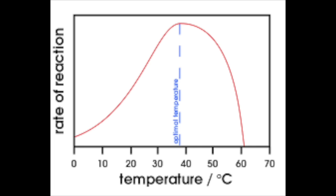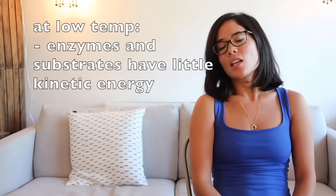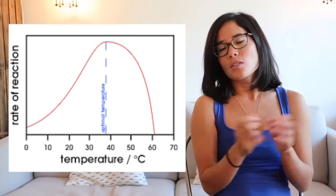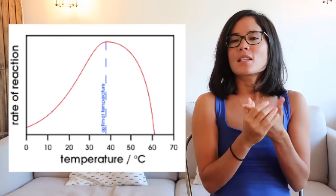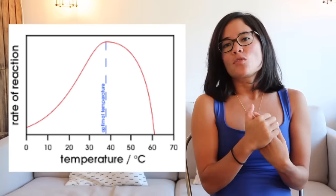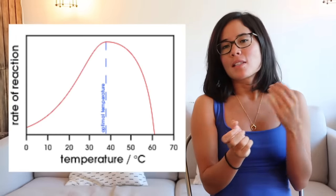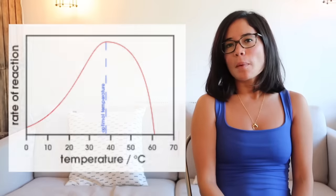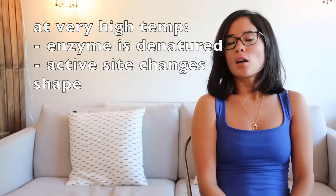Now let's touch on enzyme activity. The two things you can alter are temperature and pH. At low temperatures, enzyme activity is low because enzymes and substrate molecules have very little kinetic energy — they don't come into contact often, so they can't bind at the active site. As temperature increases, enzyme activity increases. At 37°C — the optimum temperature for most human enzymes — activity is at its peak. Above this temperature, enzyme activity drops sharply because the enzyme becomes denatured. Never say 'killed' — say denatured. The active site changes shape so the substrate can no longer fit.